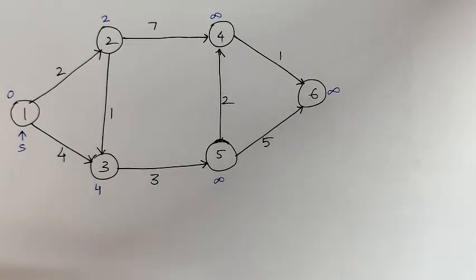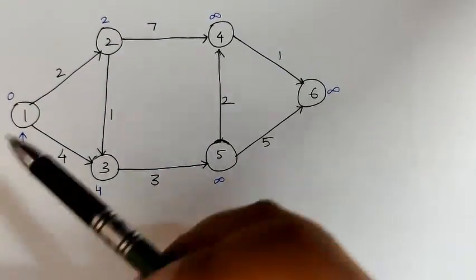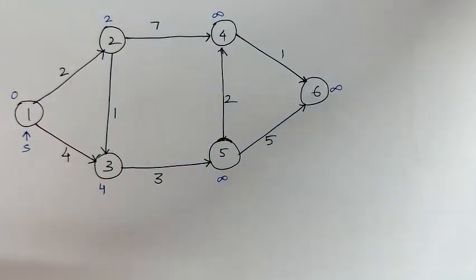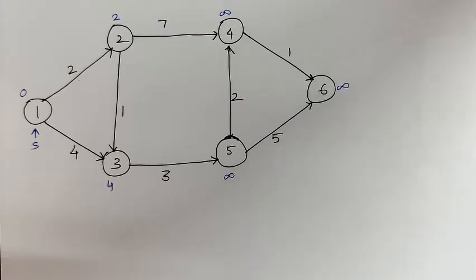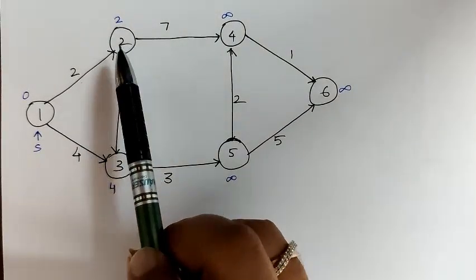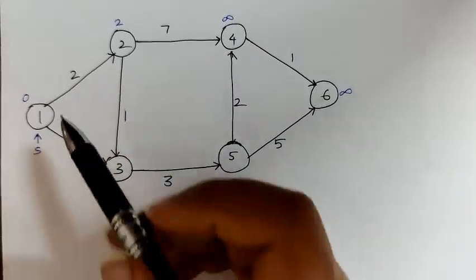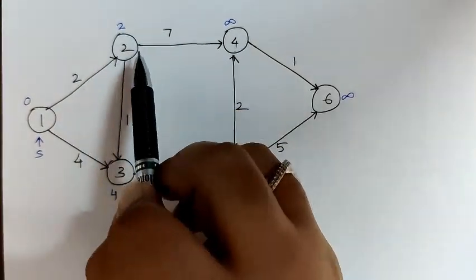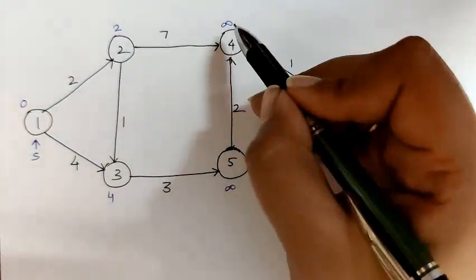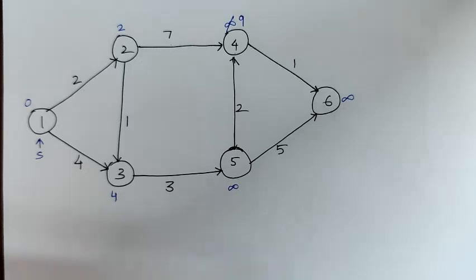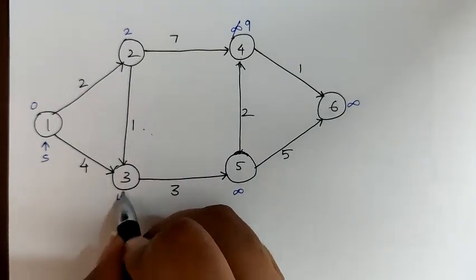Now, in this graph, let us find the shortest path. From 1 to 2 the distance is 2 and from 1 to 3 the distance is 4. So the shortest path between these two is 2. Hence we choose 2. Once we choose the shortest path, we perform relaxation. Let us see which vertices are connected to 2. Here, 2 is directed towards 4 as well as 3. First let's check the distance till 4. Cost of 2 is 2 and the distance from 2 to 4 is 7. Using relaxation, we add 2 and 7 which gives us a total of 9. So this infinity can be modified to 9. Similarly, 2 plus 1 is 3, which is less than 4. So this 4 can be modified to 3.